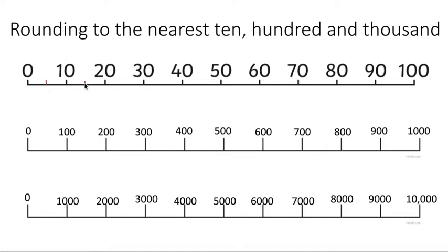Anything 5 and below will be rounded down. And again, halfway in between 10 and 20 you've got 15, so if it ends in a 5 you'd round it up; we'd round it down if it's 4 and below. When you're rounding to the nearest 10, it's going to end in a 0 — it's going to have a 0 in the 1s column — it's going to be a multiple of 10. Again, when you're rounding to the nearest 100, whatever number you find will always be a multiple of 100. All of these are multiples of 100.